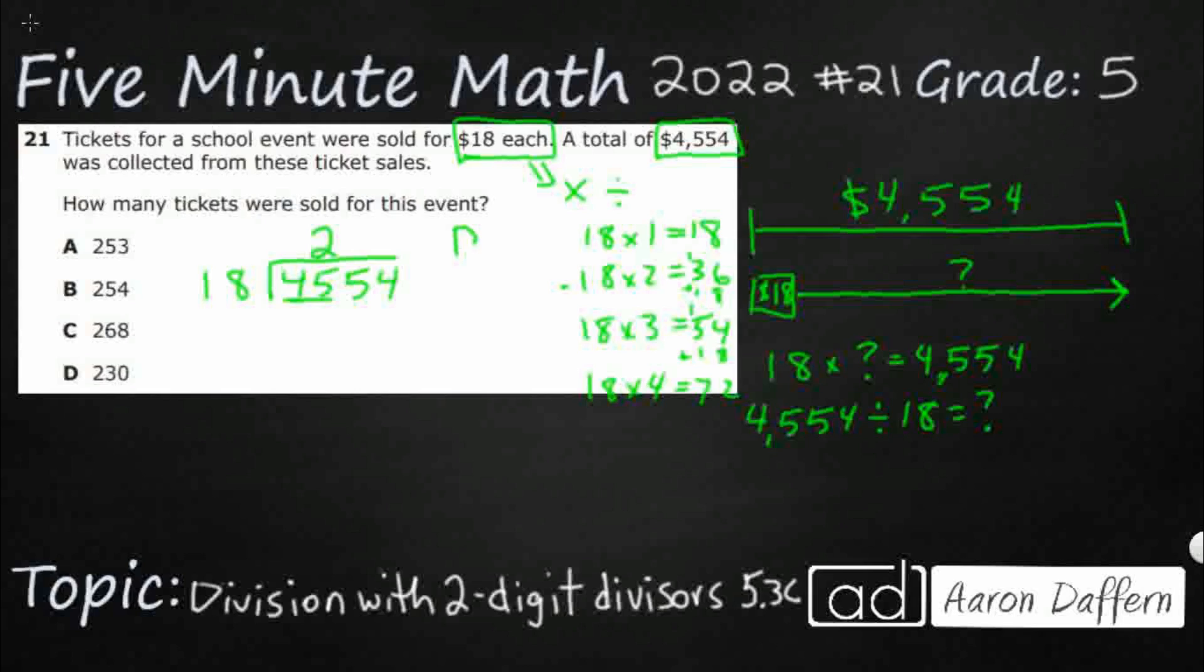And if we forget, I always remember: Does McDonald's Sell Cheeseburgers. So the steps for long division are divide, multiply, subtract, check, and then bring down. And that's why I remember that little saying, Does McDonald's Sell Cheeseburgers. So I divided, 18 goes into 45 twice. Now I need to multiply.